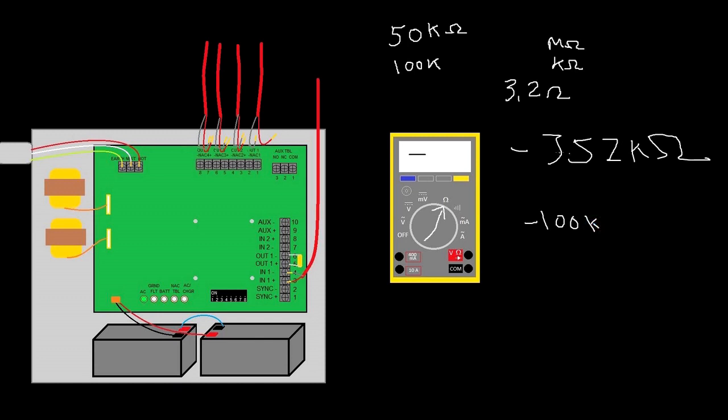To me, the first thing in my mind goes to is I've got a wet module or something on the other side of my module, like a monitor module that's wet. So maybe a valve tamper is leaky and the contacts got corroded or something.